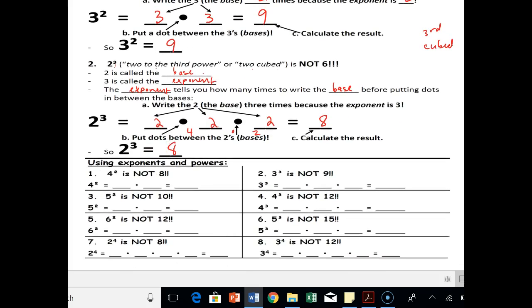So 4 to the 2 is not 8, it's 4 times 4, which is 16. 3 to the 3 is not 9, it is 3 times 3 times 3. 3 times 3 is 9, and then 9 times 3 is 27. So 3 to the 3rd is 27. 5 to the 2 is not 10, it's 5 times 5, which is 25. 4 to the 3rd is not 12, it's 4 times 4 times 4. So 4 times 4 is 16, times 4 is 64.